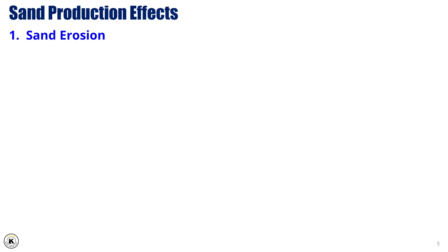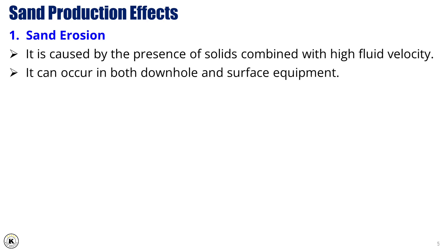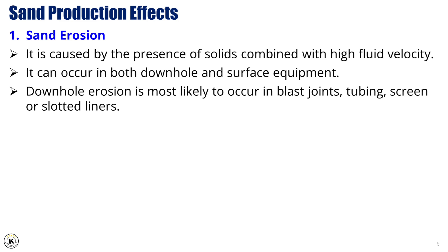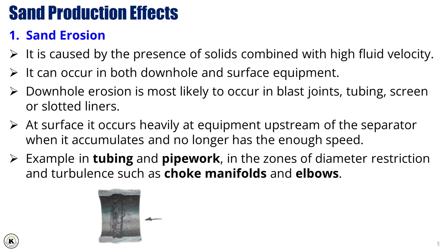Sand production effects. Operational problems related to sand production vary from expensive sand handling problems to the complete loss of a productive zone, or even the possibility of loss of well control due to eroded surface equipment. Sand erosion is caused by the presence of solids combined with high fluid velocity, and can occur in both downhole and surface equipment. Downhole erosion is most likely to occur in blast joints, tubing, screens, or slotted liners. At surface, it occurs heavily at equipment upstream of the separator, for example in tubing and pipework in zones of diameter restriction and turbulence, such as choke manifolds and elbows.